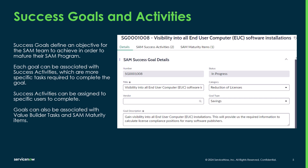So what are success goals? Success goals define an objective for a SAM team to achieve in order to mature their SAM program. Each goal can be associated with very specific activities, and those activities can be assigned to specific users to complete — they don't actually have to all be within the SAM practice. Goals can also be associated with Value Builder Tasks and SAM maturity items. Success goals should be goals that your SAM team has that either align to your organization's business objectives or help mature the SAM program.